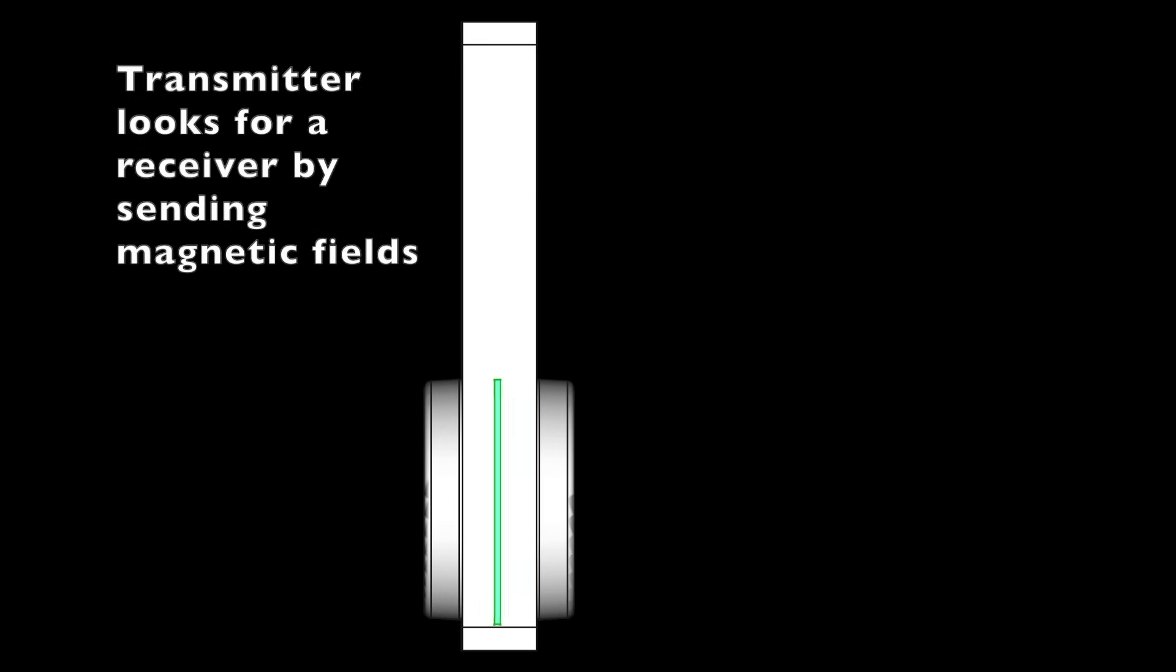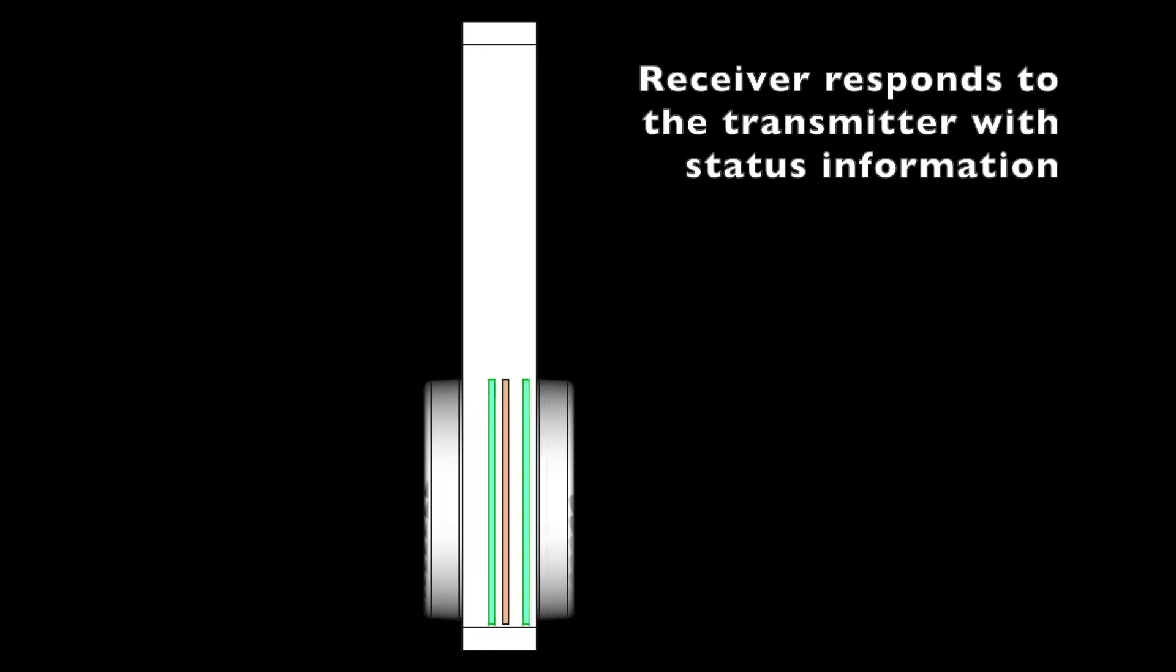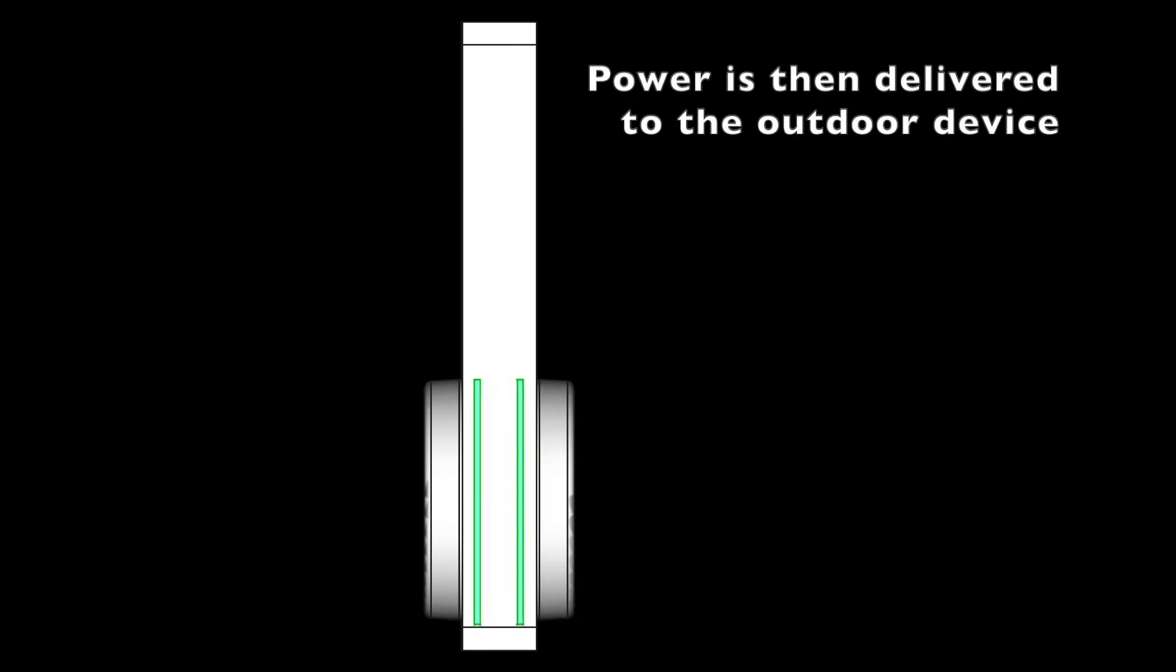On your window, the receiver and outdoor device can be installed, followed by the transmitter. When the transmitter is plugged into an outlet, it begins to look for a receiver. The receiver communicates with the transmitter to facilitate power transfer, and then the receiver applies power to the outdoor device. The transmitter and receiver remain in communication to ensure proper power transfer is occurring.